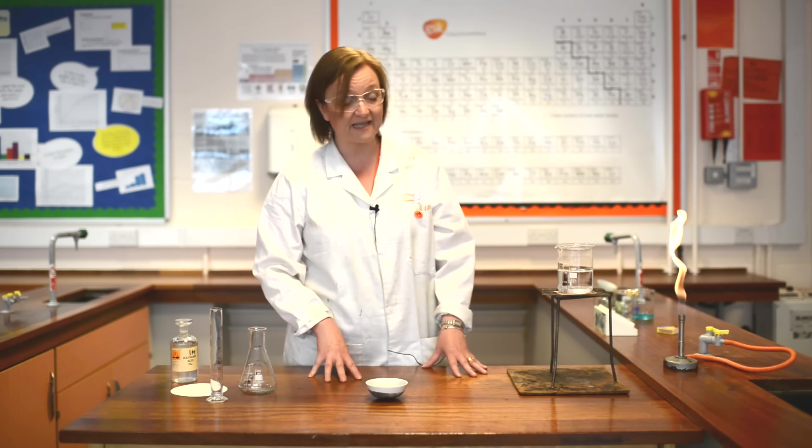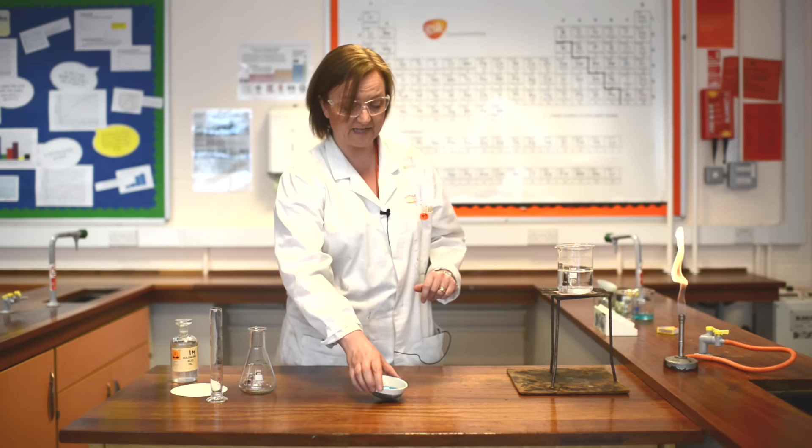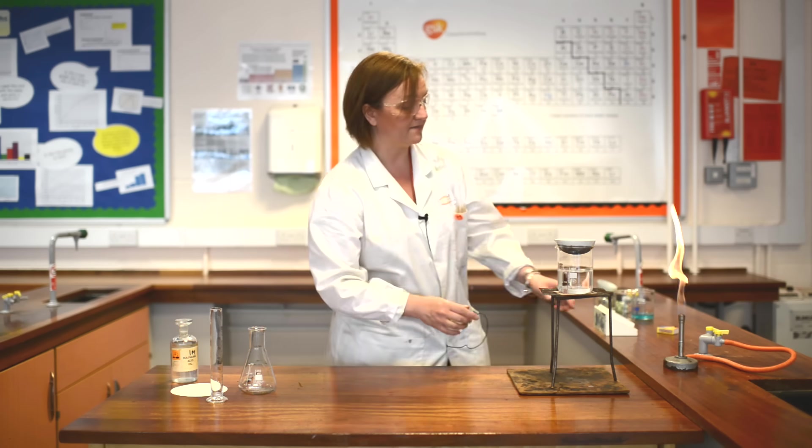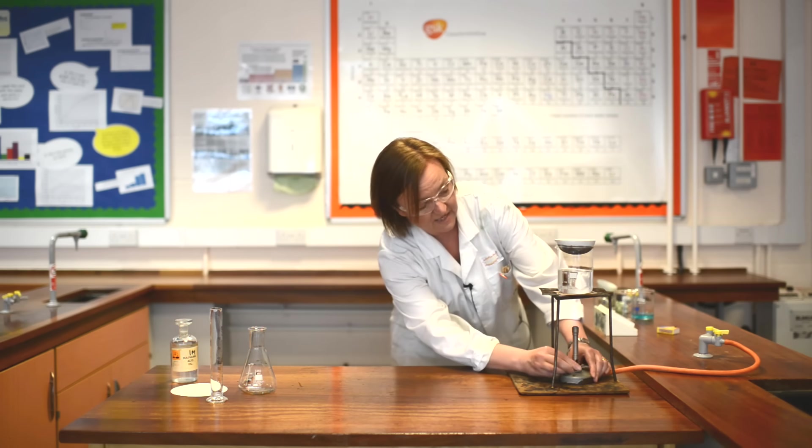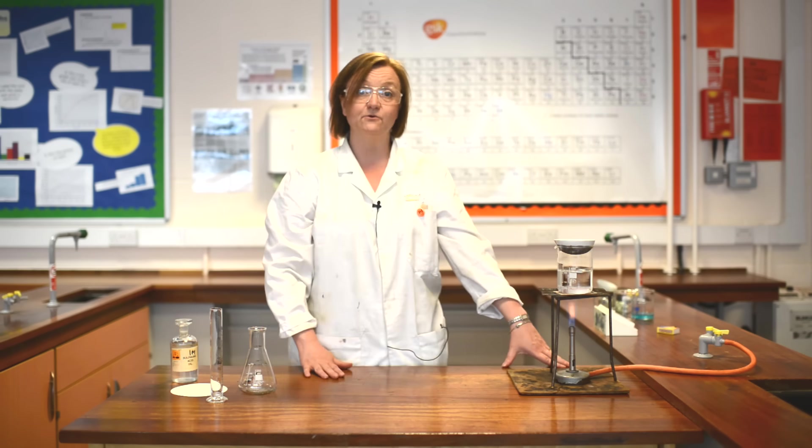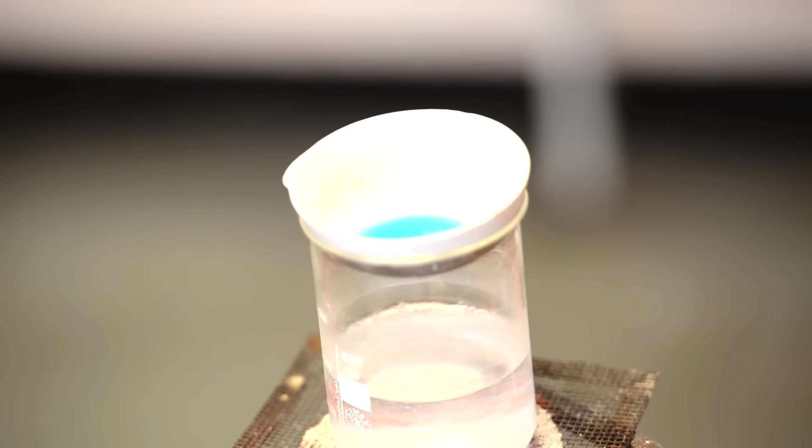Instead, I'm going to heat them more gently over a beaker of boiling water. I place my evaporating basin on here, and then my Bunsen burner goes underneath. This is just a slightly gentle way of heating it. As the water boils, the steam will heat the bottom of the evaporating basin and the water from the crystals will evaporate.